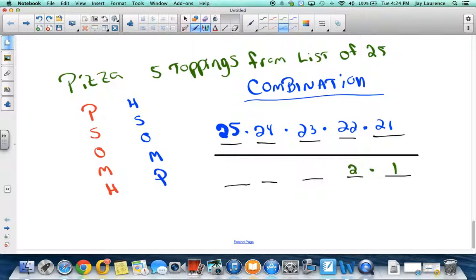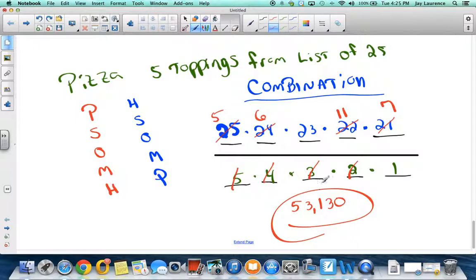All right. So, I'm going to simplify as much as possible. Five is going to go into 25 five times. Four goes into 24 six times. Three goes into 21 seven times. Two goes into 22 eleven times. Now, all I have to do is multiply five times six times 23 times 11 times seven. Five times six times 23 times 11 times seven. And, I get 53,130 different pizzas you could make. That's pretty amazing.